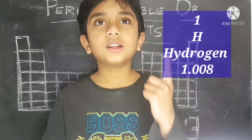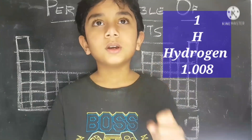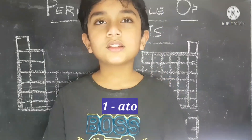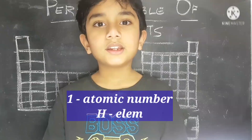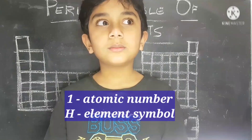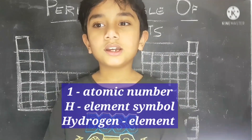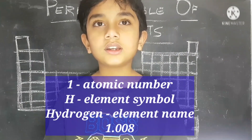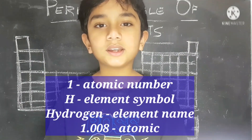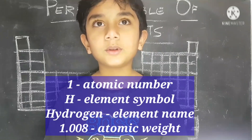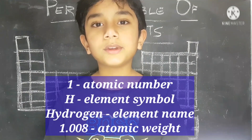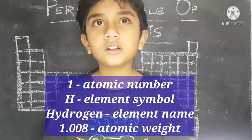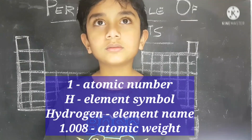For example, Hydrogen is written like this: 1 is the atomic number, H is the atomic symbol, Hydrogen is the element name, and 1.008 is the atomic weight.